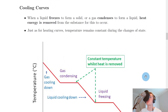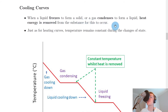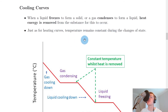Next we have cooling curves, and these work in a very similar way to heating curves but in the opposite direction. When a liquid freezes to form a solid, or a gas condenses to form a liquid, heat energy is removed from the substance for this to occur. Just as for heating curves, temperature remains constant during the changes of state.